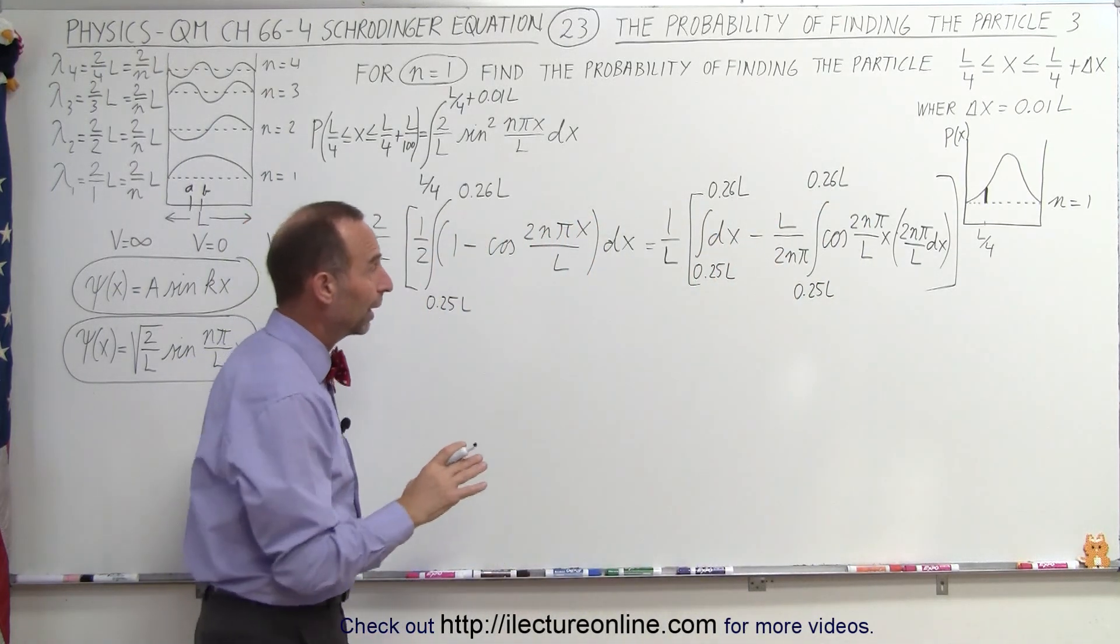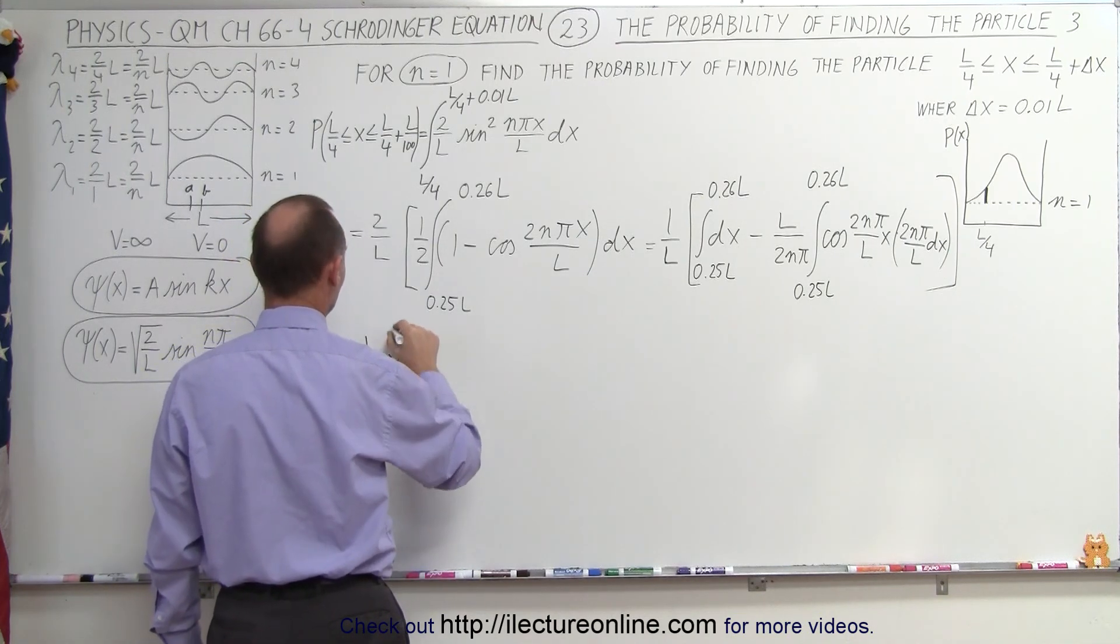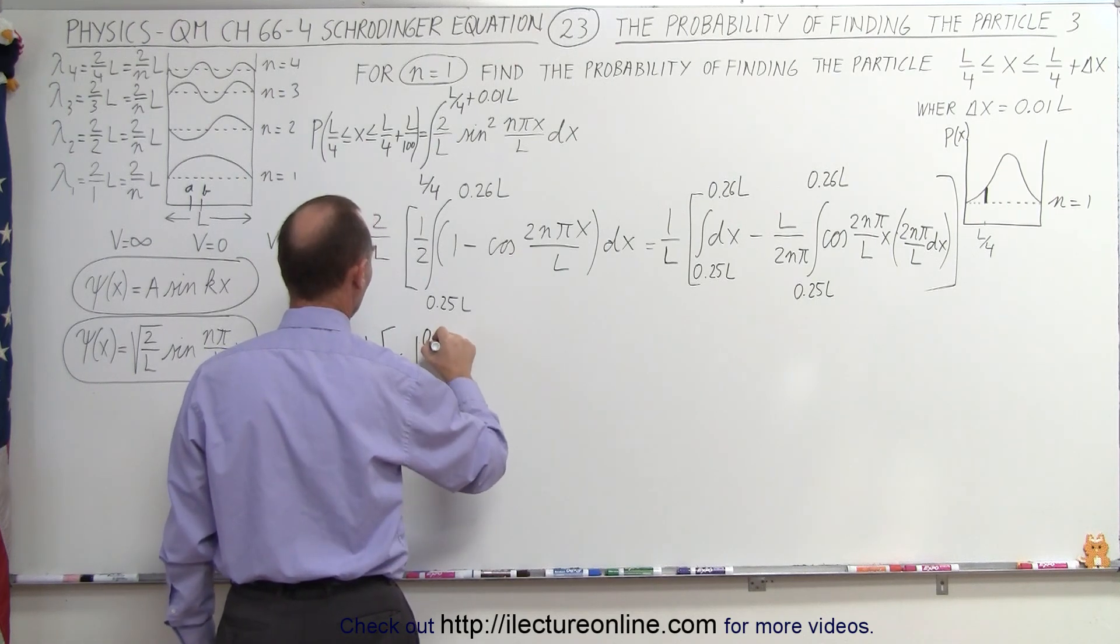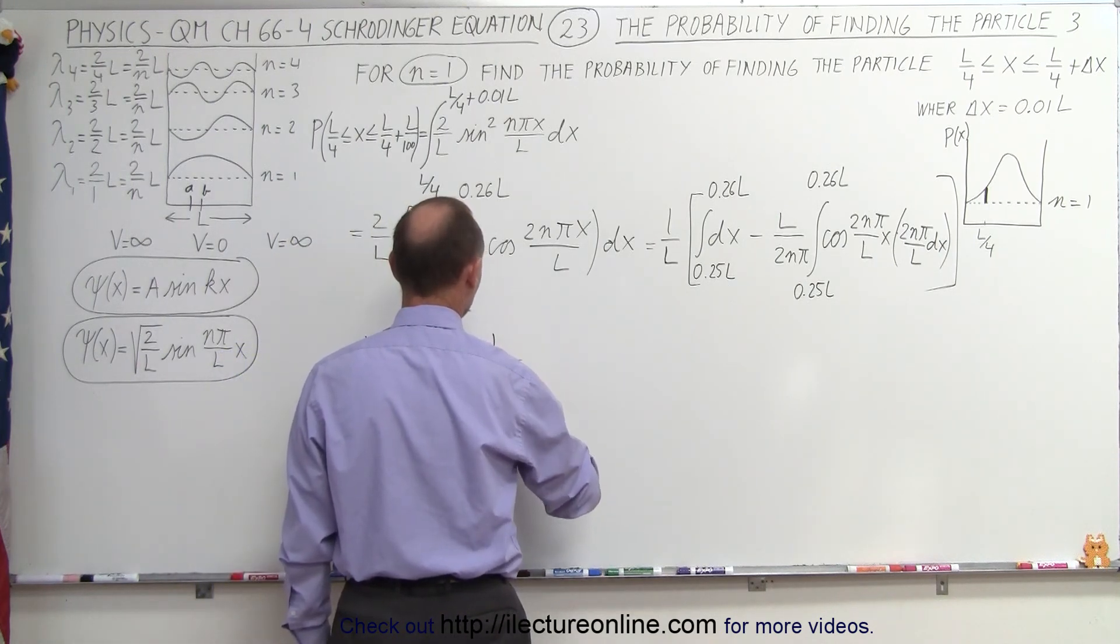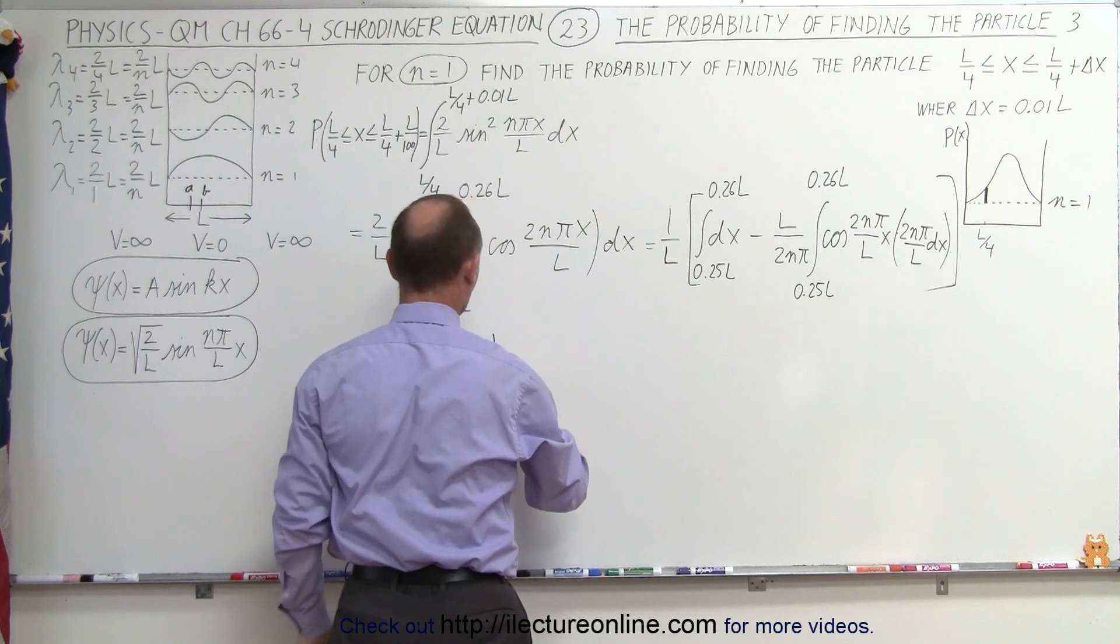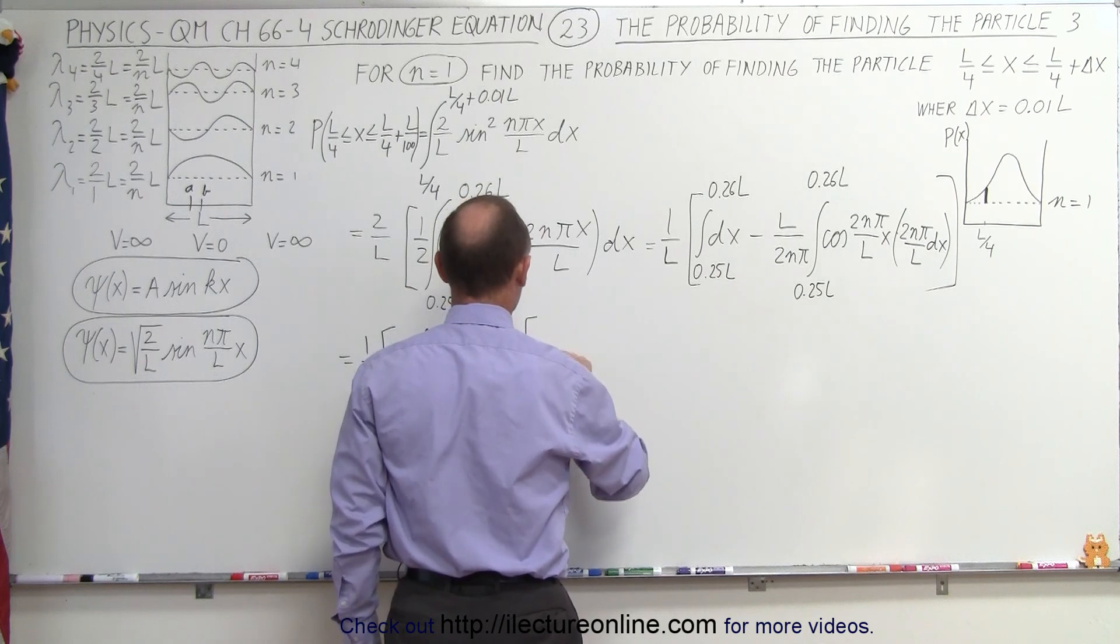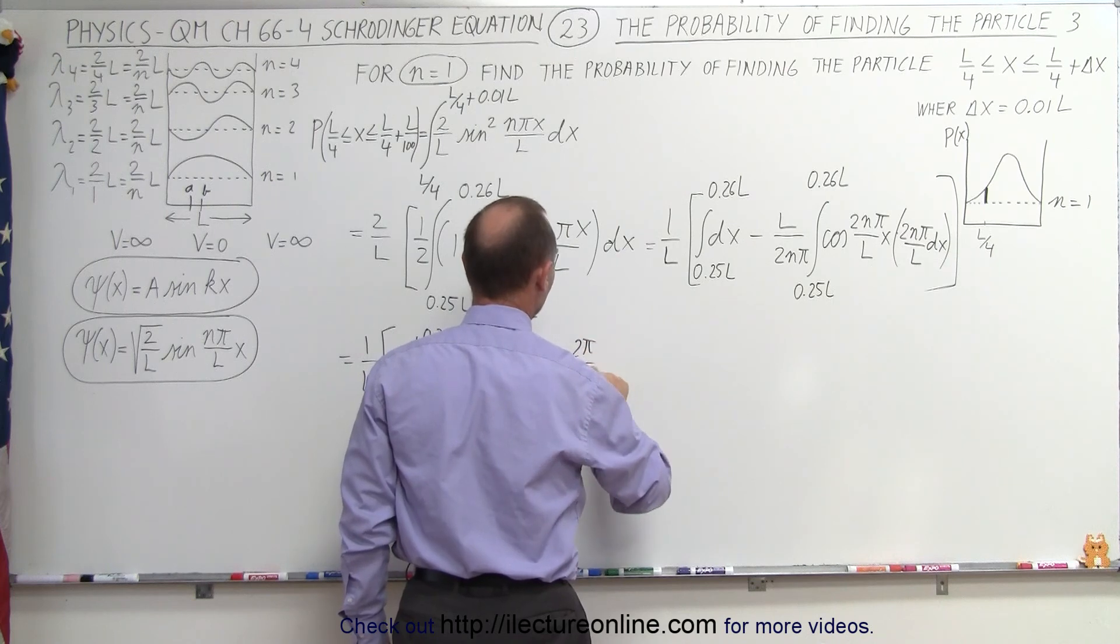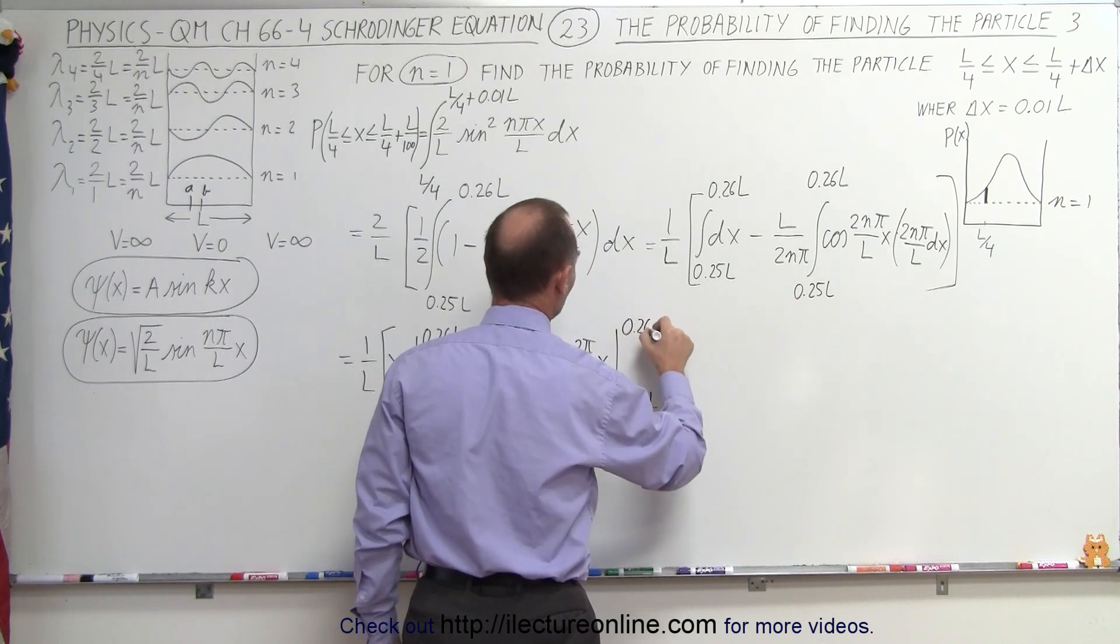So now we're ready to go ahead and do that integral. So this is equal to 1 over L times x evaluated from 0.25L to 0.26L minus L divided by 2n pi. Now, n, of course, in this case is going to be equal to 1. So we can just replace n by 1. So this becomes L over 2 pi. The integral of the cosine is the positive sine. So it would be the sine of 2 times n, which is 2, 2 pi divided by L times x, evaluated from 0.25L to 0.26L.